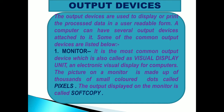Output devices are used to display or print the processed data in a user-readable form. A computer can have several output devices attached to it. The most common output device is the Monitor, also called a Visual Display Unit (VDU). The picture on a monitor is made up of thousands of small colored dots called pixels. The output displayed on the computer monitor is called soft copy.